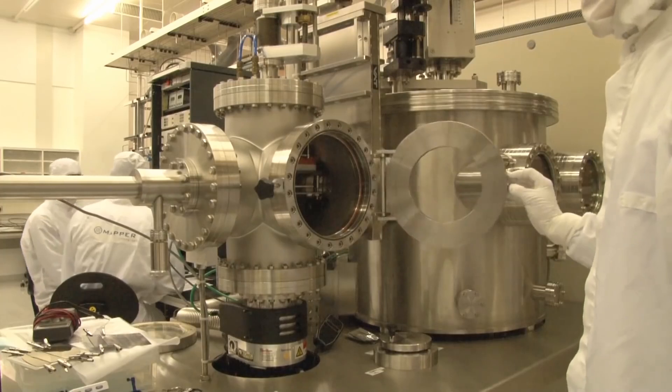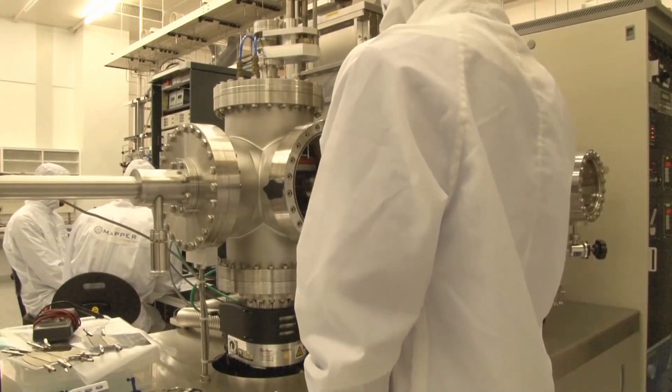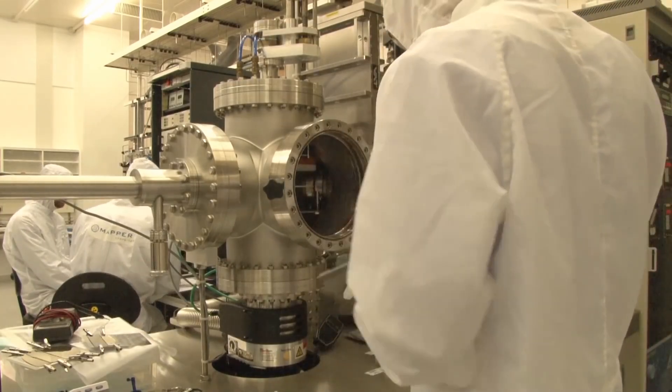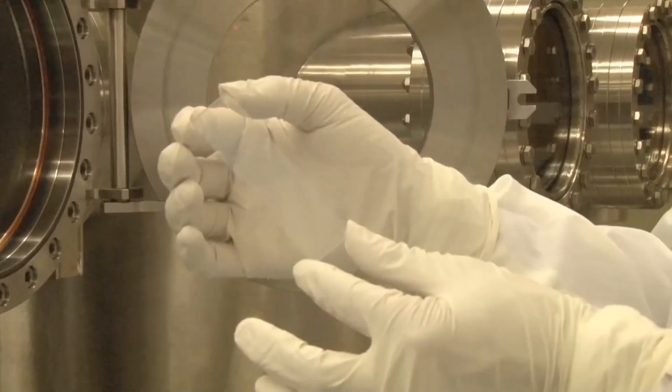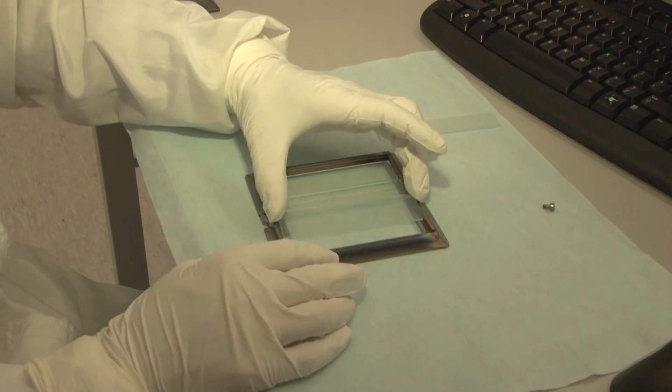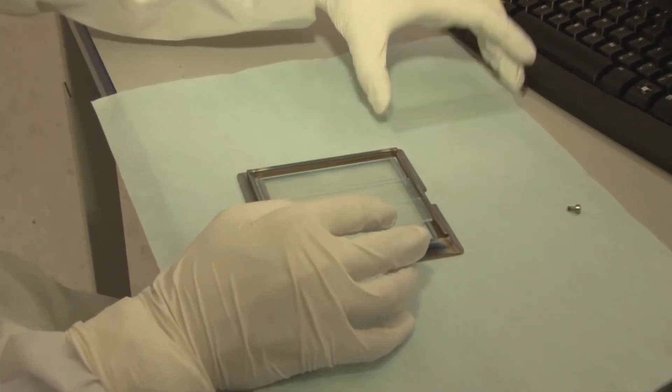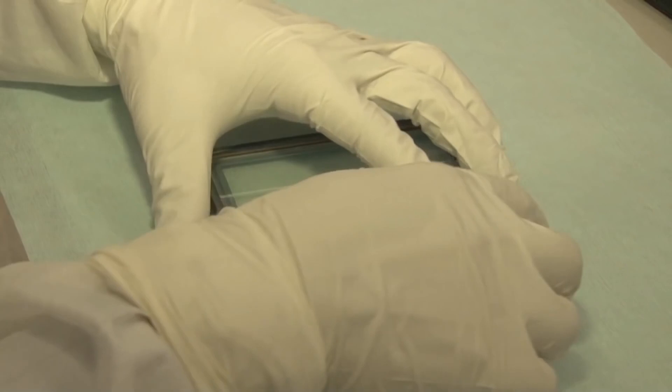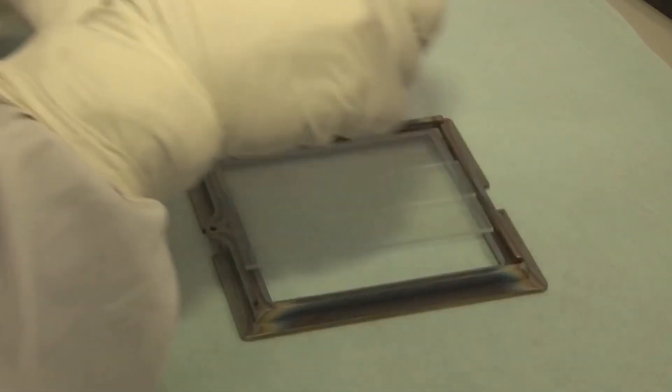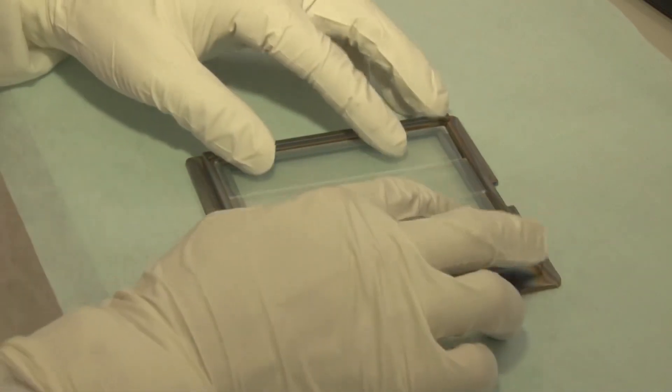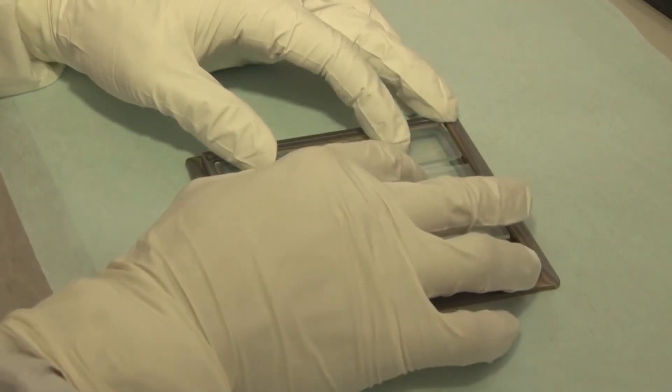After the sputtering processing step, we have a glass plate with a thin oxide with on top a very thin zinc oxide layer. Next, the samples are mounted into a different substrate holder. This substrate holder is used during the plasma-enhanced chemical vapor deposition step to deposit the various thin silicon films.